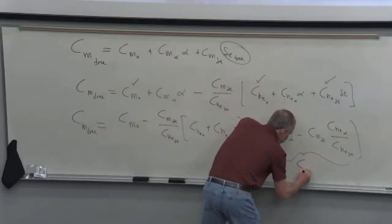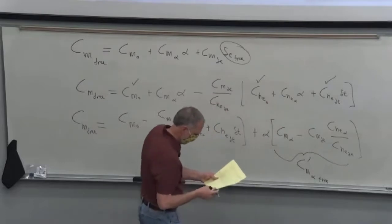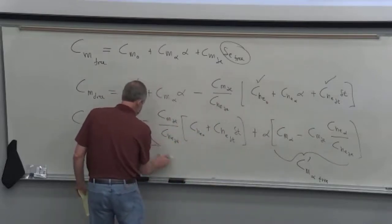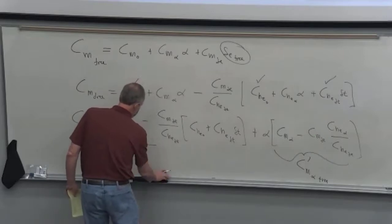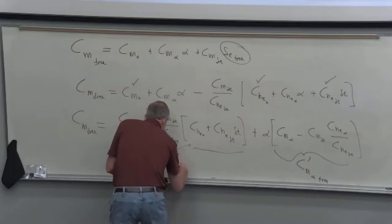And we find out that the basic pitchability, and we're going to call this CM alpha free. Put a prime on it. And this is CM zero. So it's still a straight line equation. It's just the slope has changed and the intercept has changed.